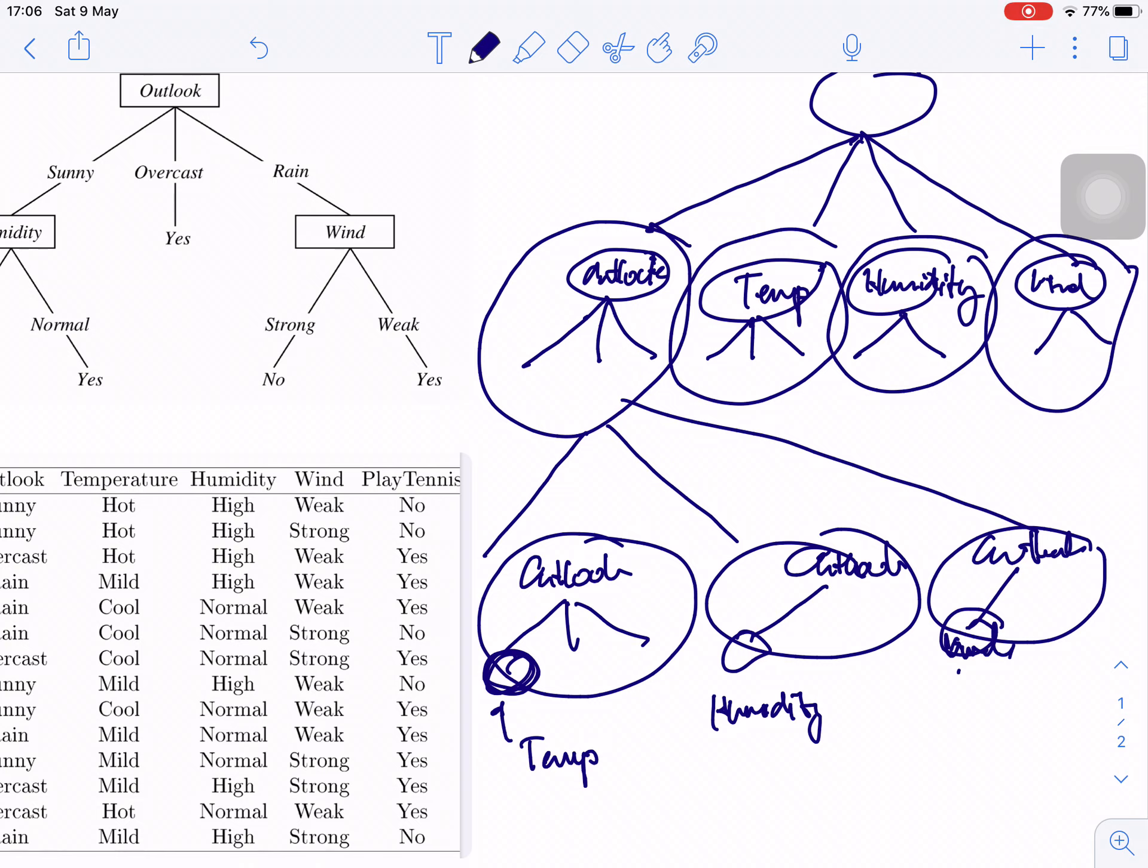In our training set, we have 14 days, right? So it means that we have 14 data examples, okay? So you have to build the tree that can correctly classify all of them. And like this, you can do it in the brute force way that you can do it.